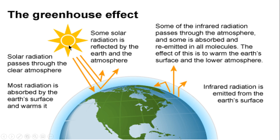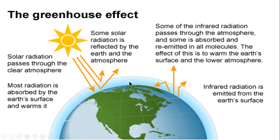Here is an example diagram of the greenhouse effect. Solar radiation passes through the clear earth atmosphere; most radiation is absorbed by the earth's surface and warms it. Some solar radiation is reflected back by the earth's surface into the atmosphere. Some of the infrared radiation emitted from the surface is redirected back toward the earth due to the greenhouse gases accumulated over the surface of the earth.